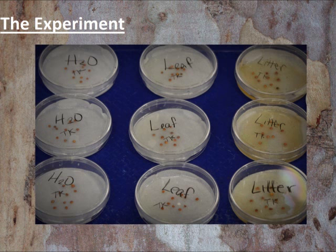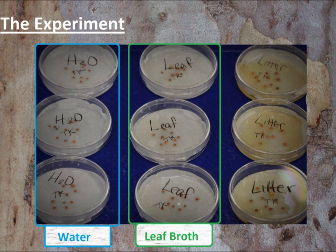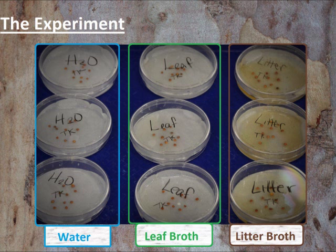The liquids were then separated from the solids and cooled in 25 milliliter graduated cylinders for 15 minutes. Each tray of seeds was watered with 8 milliliters of its respective water — our control group received plain H₂O, our leaf test group received our bright green broth, and our litter test group received the dingy brown broth. Then we waited for seven days.